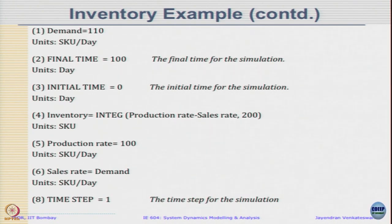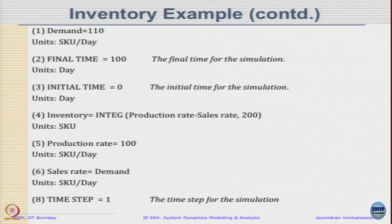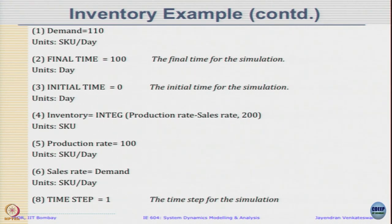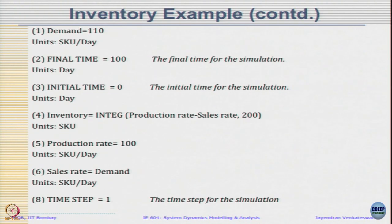What you see here is the documentation as provided by Vensim. When you build a model and click the 'document all' button in Vensim, it represents the underlying equations along with variable names and units. The output is sorted alphabetically — that is why you get demand first, then final time, initial time, inventory, etc. To identify the stock, look for the word 'Integ' — whatever variable name is next to it is the stock. Whatever affects through Integ — production rate, sales rate — those must be the flows. Then equations of flows are given, units for each are given, and model settings provide initial time, final time, and time step. Whatever is not a rate must be an auxiliary variable.